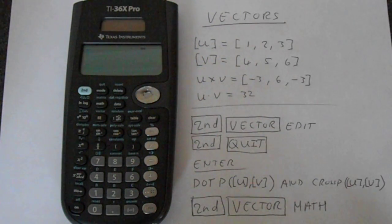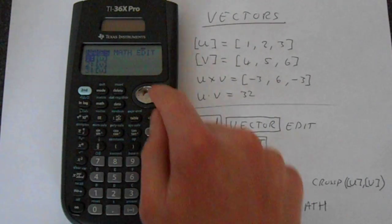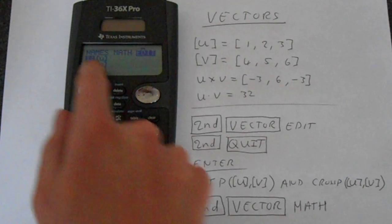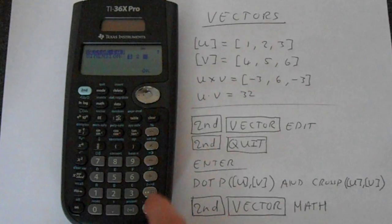So first thing we have to do is insert the vectors. So second function, then go to vector and go across to edit. We're going to edit vector u, so go to 1, and we'll make this dimension 3, so go across to 3.